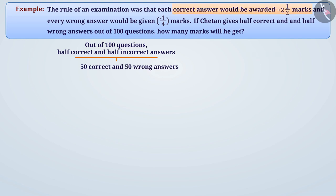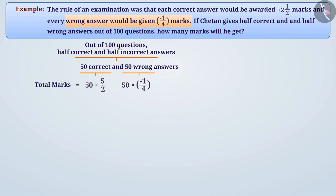A correct answer is given two and a half marks, that is five by two marks. So he will get fifty multiplied by five by two marks for fifty correct answers. Similarly, minus one by four marks for one wrong answer, so he will get fifty multiplied by minus one by four marks for fifty incorrect answers. In this way, he will get total marks fifty multiplied by five by two plus fifty multiplied by minus one by four.